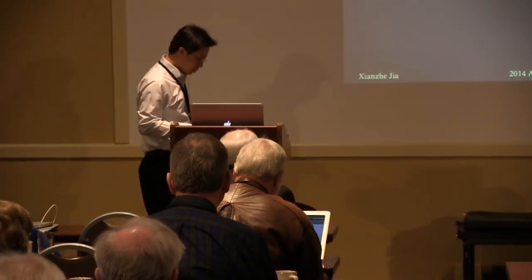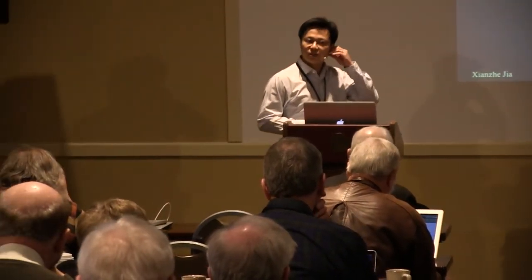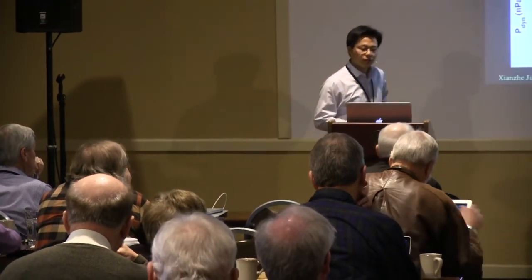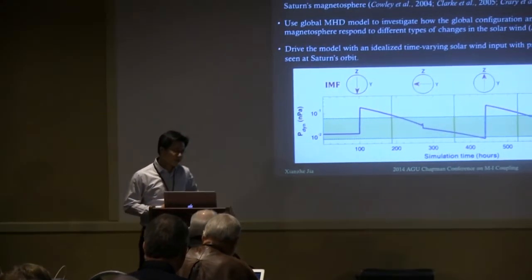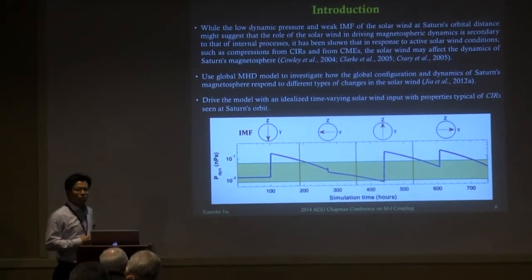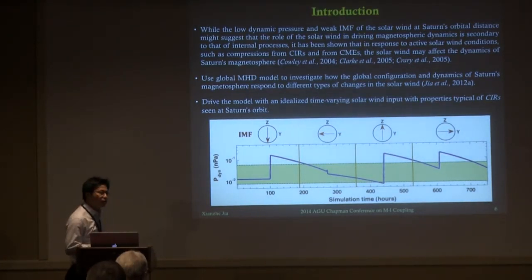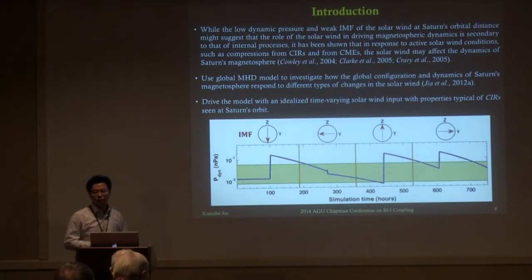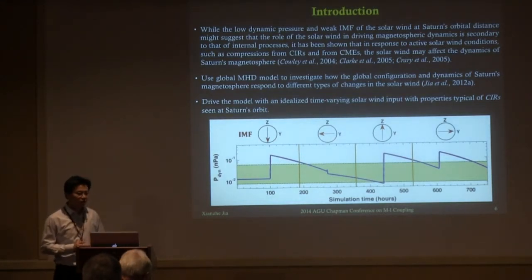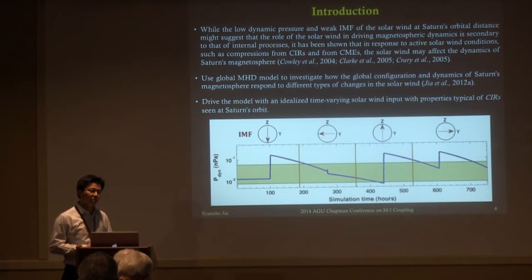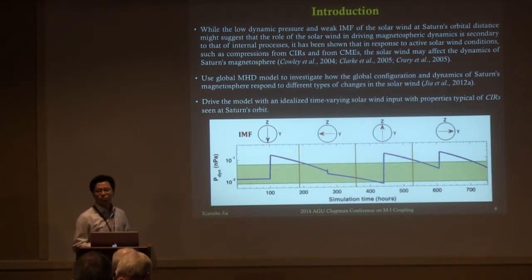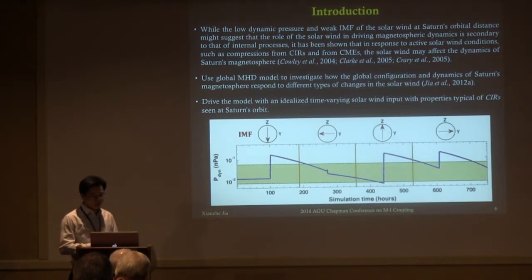I'm going to first talk about the simulation investigating the interaction between solar wind disturbances and Saturn's magnetosphere. When Cassini got into orbit in 2004, it was in the declining phase of the solar cycle, in which we very frequently see CIR structures — co-rotating interaction regions — passing by Saturn. The interest is to look at how the CIR interacts with Saturn's magnetosphere. There is a lot of evidence from radio and in situ observations from Cassini showing that Saturn responds very strongly to these solar wind disturbances, so we ran our model to look at that effect.